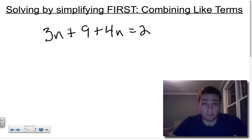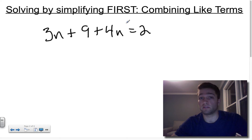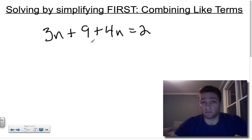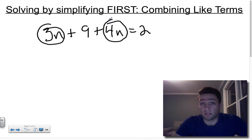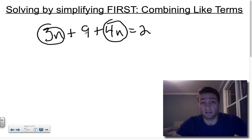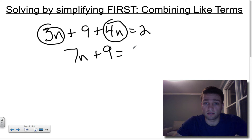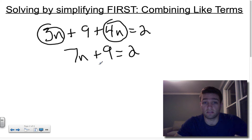This has many more than two steps — we've got multiplying, addition, addition, multiplying — so that's a four-step equation. But we can bring this down to a much more manageable problem if we first combine our like terms. You should see right away that 3n and 4n are like terms. Combining them breaks the equation down to 7n + 9 = 2 — a nice two-step equation.